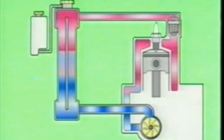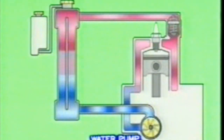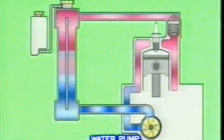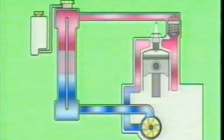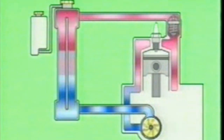This diagram shows how the conventional water-cooling system works. As the engine turns, the water pump pumps the coolant through the water jacket, or passages, around the cylinder and cylinder head. The coolant in the water jacket absorbs the heat of the engine. The heated coolant then passes through the radiator, where its heat is transferred to the air that passes through the radiator. The coolant then returns to the pump and is pumped through the system again.